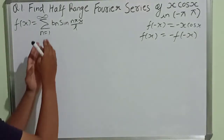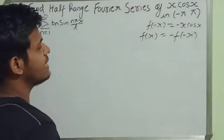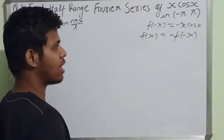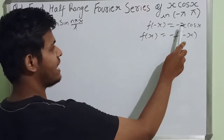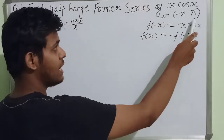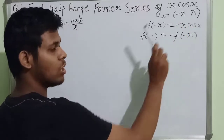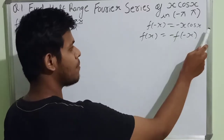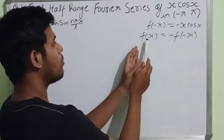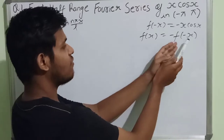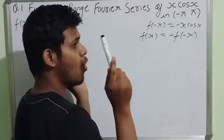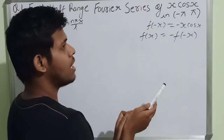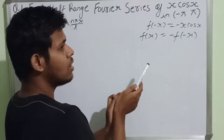Let's do one question so you can get more clarity on how to solve this type of problem. The question is: find the half-range Fourier series of x·cos(x). When we determine f(minus x), we get minus x·cos(x), which equals minus f(x). So this is an odd function, and we are going to take a sine series.